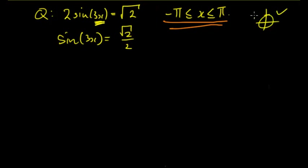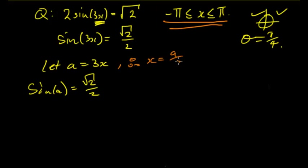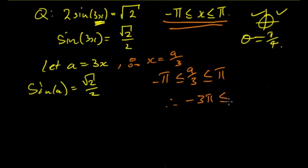Let a = 3x, so sin(a) = √2/2. At this stage I want to change the domain in terms of a. Since a = 3x, then x = a/3. Substituting into the domain gives −π < a/3 < π, and multiplying through by 3 gives −3π < a < 3π. Now I've got the domain in terms of a, which will be useful when solving for a.